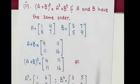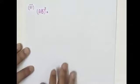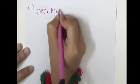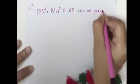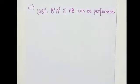Property 3: (AB)^T = B^T·A^T, provided the product AB can be performed. We take an example with 2×2 matrices: A = [2, 4; 6, 8] and B = [1, 3; 5, 9]. First we will solve the left-hand side, which is (AB)^T, so we begin by multiplying matrices A and B.